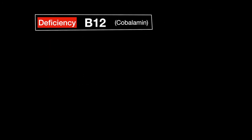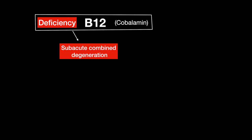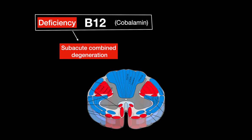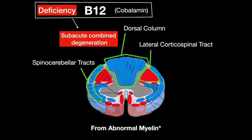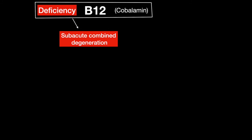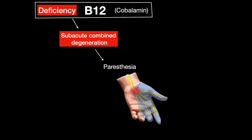A B12 deficiency can cause subacute combined degeneration, in which the spinal cord — specifically the dorsal column, lateral corticospinal tracts, and spinocerebellar tracts — degenerates. This results from the body producing abnormal myelin due to the B12 deficiency. Paresthesia can result from this degeneration, and a prolonged B12 deficiency can result in irreversible nerve damage.